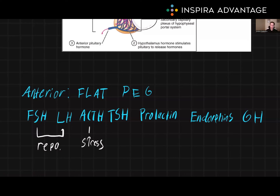Then we have TSH, or thyroid-stimulating hormone. This hormone regulates the thyroid gland by stimulating the production and release of thyroid hormones, which regulate the body's metabolism and energy levels.